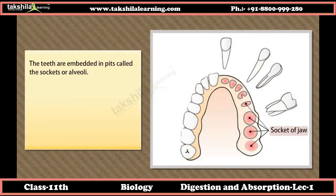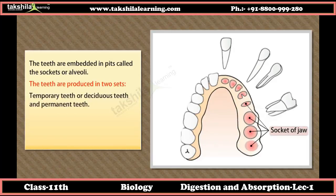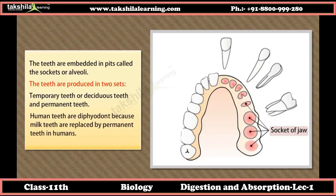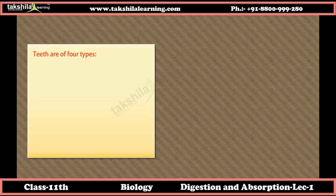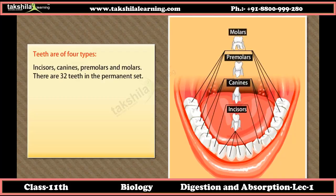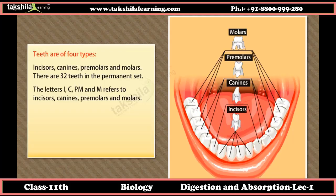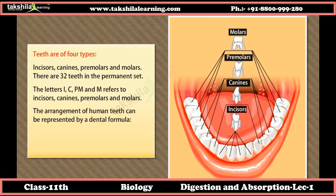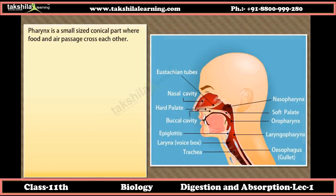Teeth are present in both jaws in the form of semicircular arches, embedded in pits called sockets or alveoli. Teeth are produced in two sets: temporary or deciduous teeth and permanent teeth. Humans are diphyodont because milk teeth are replaced by permanent teeth. Teeth are of four types: incisors, canines, premolars, and molars. There are 32 teeth in the permanent set, and their arrangement can be represented by a dental formula.